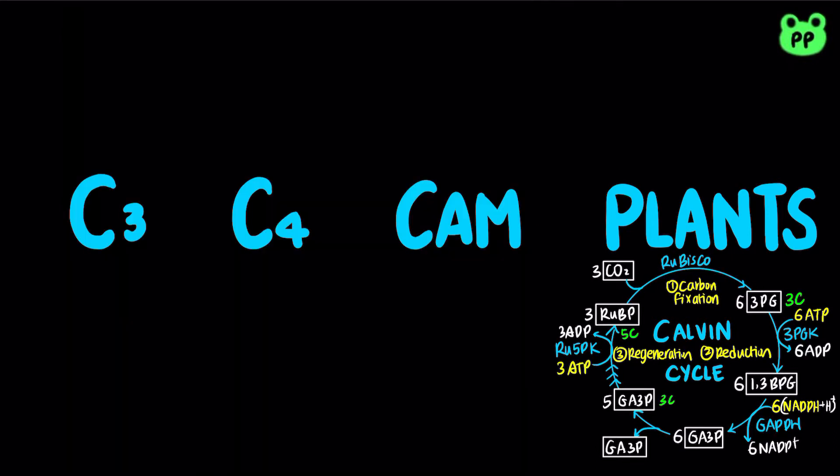Therefore, the net reaction of the Calvin cycle involves the assimilation of three carbon dioxide into one molecule of glyceraldehyde 3-phosphate, which hydrolyzes nine ATP and oxidizes six NADPH derived from the light reaction.